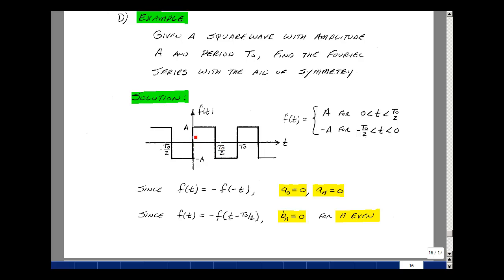We could write an equation for this. Between 0 and T over 2, we have a value of A, and then between minus T0 over 2 and 0, we have a value of minus A.